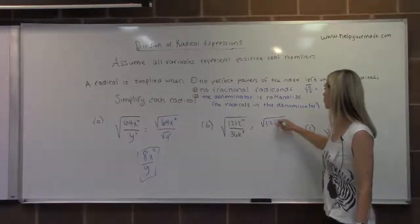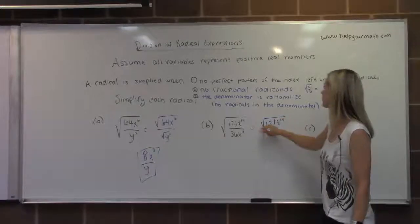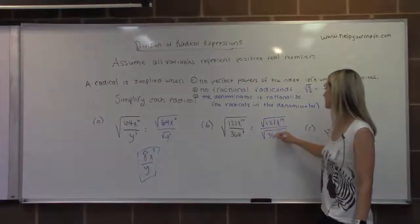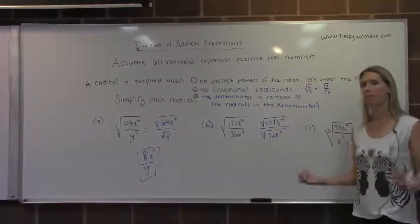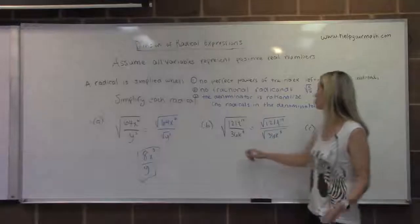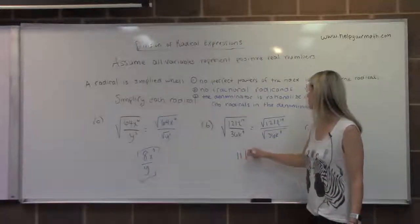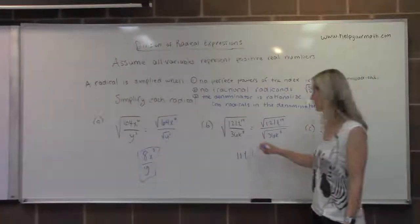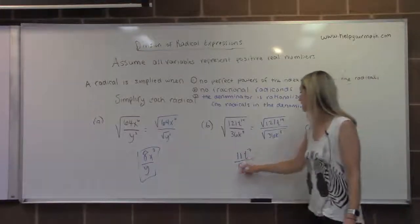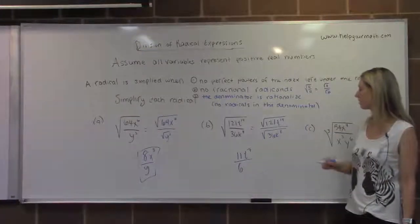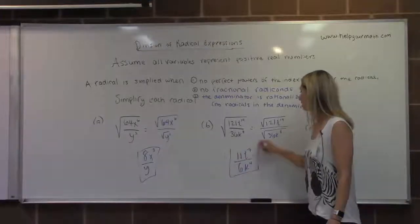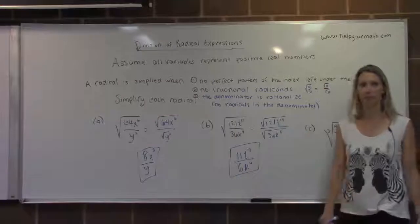I'd rewrite the numerator as the square root of 121t to the 14th, and in the denominator, the square root of 36k to the eighth. Then we're going to simplify. The square root of 121 is 11, the square root of t to the 14th is t to the seventh. In the denominator, the square root of 36 is 6, and the square root of k to the eighth is k to the fourth. This would be our completely simplified expression for letter b.